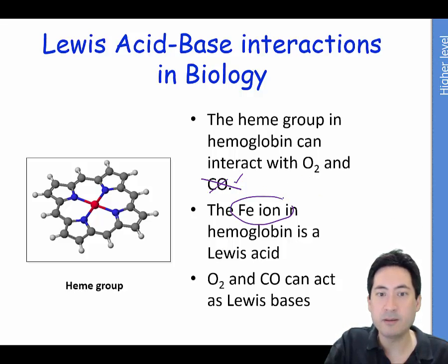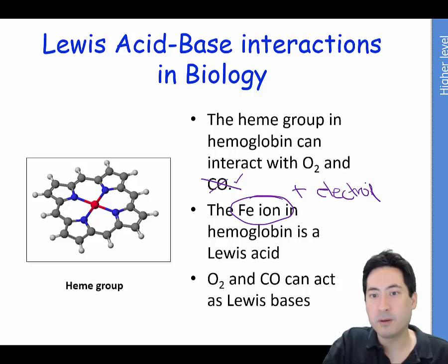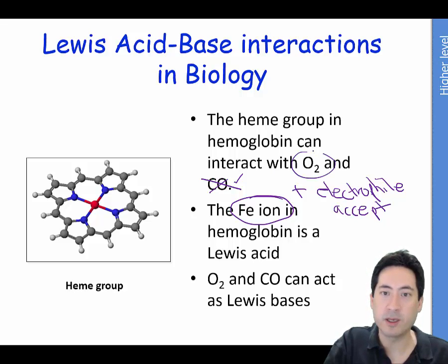The iron ion is positive. By its very nature, if it's positive, it's going to be an electrophile, and it's going to accept the electron pair from the oxygen or the carbon monoxide. So that would make that an acid, a Lewis acid.